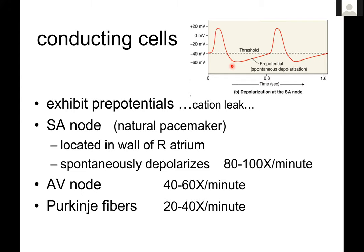The depolarization pattern shown here is that of the sinoatrial node. The time it takes to depolarize, repolarize, and get back to another threshold is about 0.8 seconds. Keep that number in mind — understanding that the SA node potential takes about 0.8 seconds to complete will help you understand why other cardiac events also take about 0.8 seconds to complete.